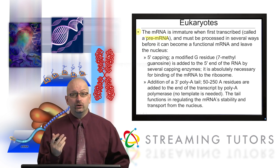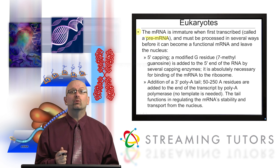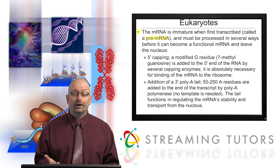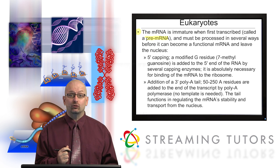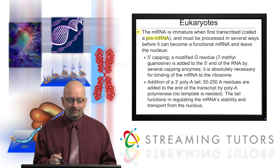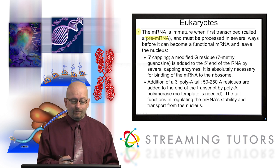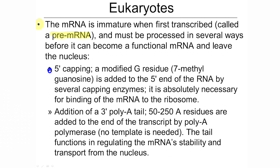In eukaryotes, however, several things must occur before this pre-mRNA is mature and ready to go out to the ribosome and get translated. Let's take a look at a couple of things that have to happen. First, at the 5' end, capping has to occur.